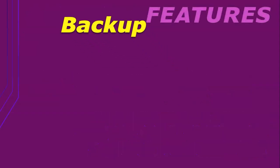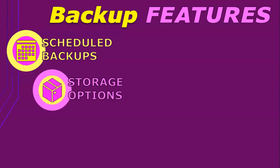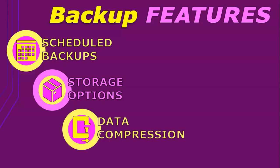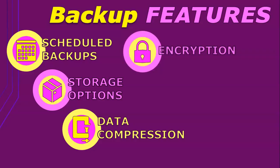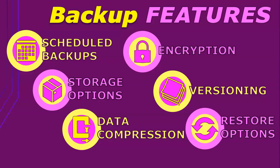While we're on the topic of backups, let's talk about what other features you may be looking for in backup software. Scheduled backups — can it automatically back up your files on a schedule? Storage options — can you back up to different places like an external hard drive, a cloud service, or a network drive? Data compression — does it make the backup file smaller to save space? Encryption — does it keep your backup files secure and private? Versioning — can it keep multiple versions of your files so you can go back to earlier versions if needed? And restore options — how easy is it to get your files back from the backup?